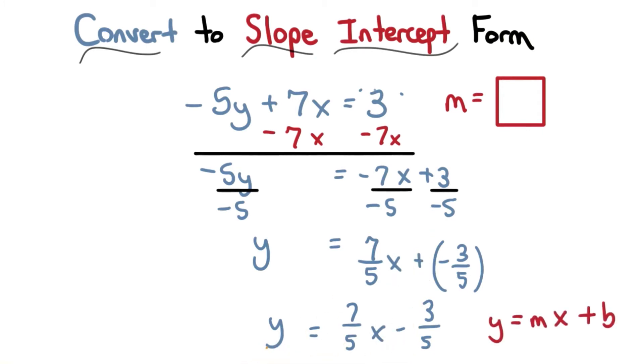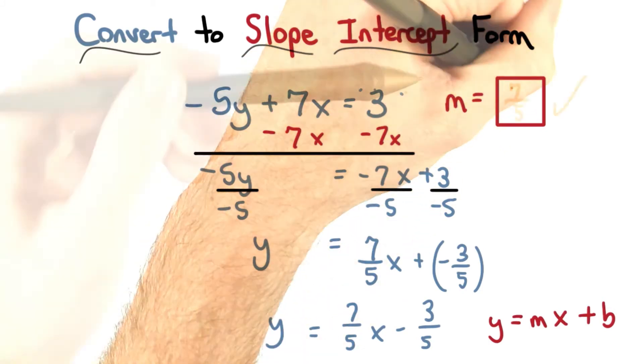Our equation is in slope intercept form, so our slope must be 7 fifths. Well done if you got that one.